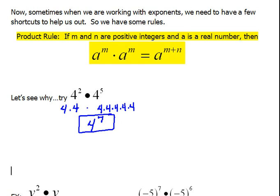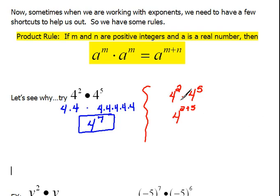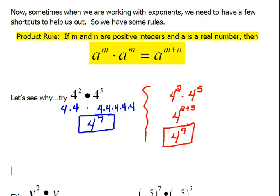That's what's really going on. Now let's use the rule we just talked about to see how that happens. We have 4 squared times 4 to the 5th. According to our formula, a to the m times a to the n means we add those exponents. So that would be a base of 4 to the 2 plus 5 power, and 2 plus 5 is 7. We get the exact same thing — this is the rule and this is why it works.